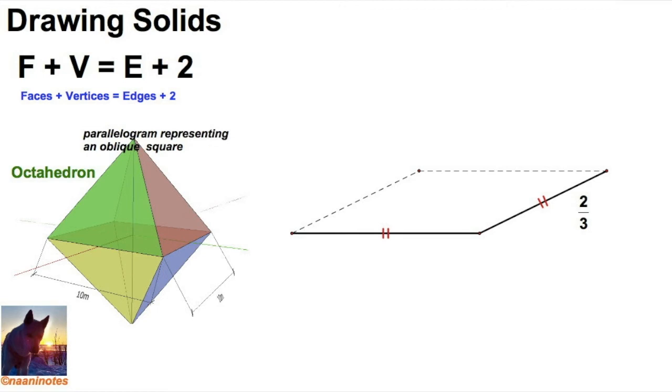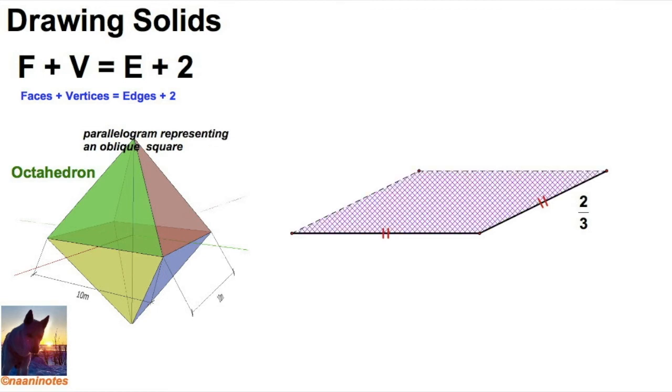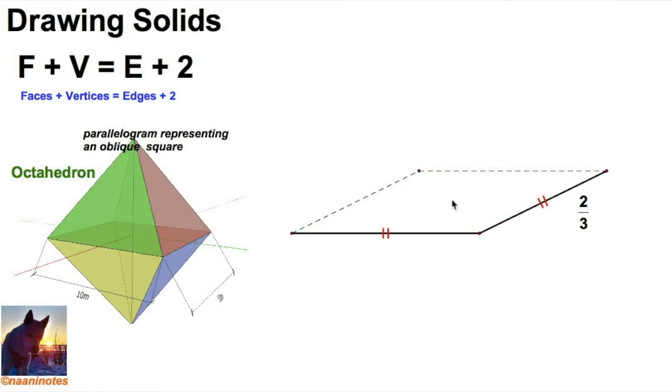Now I've got to find a point in the middle. I could do that several ways. If I'm a constructing kind of guy, if I drew these two diagonals, the intersection of those two diagonals is the point that I want.